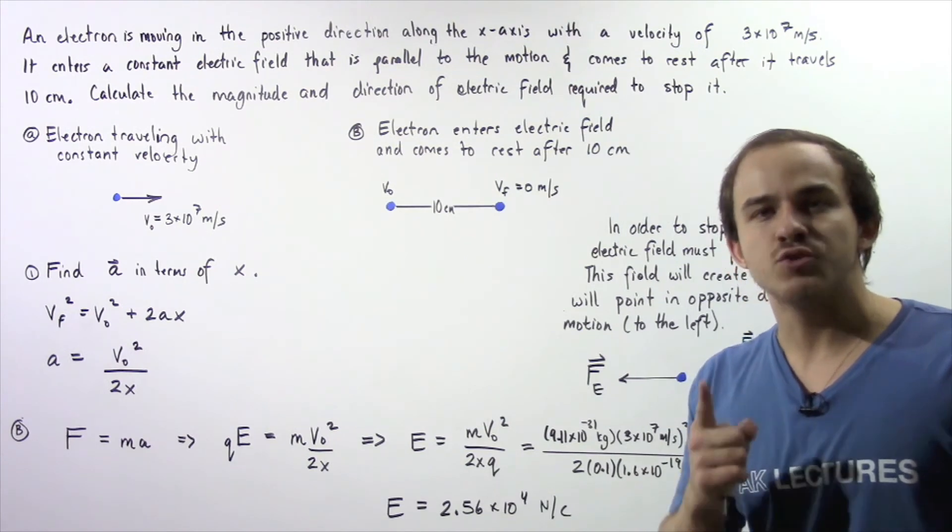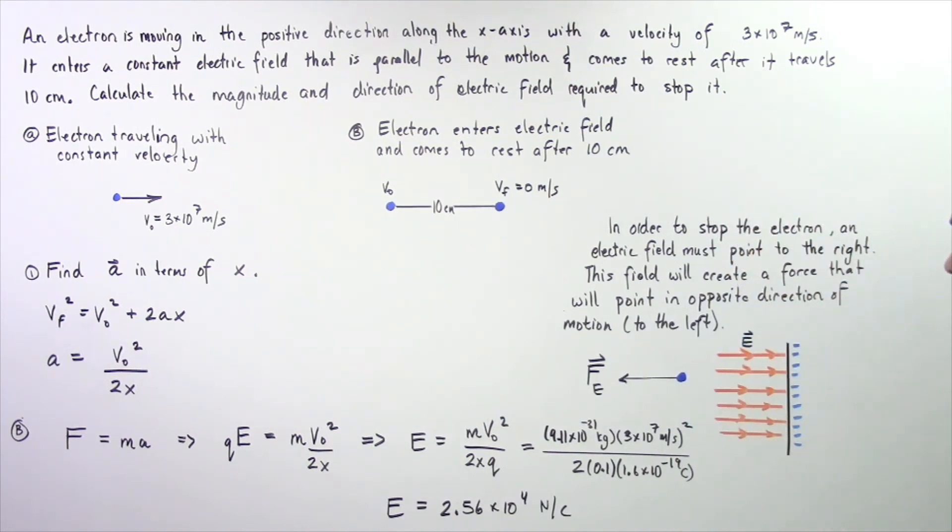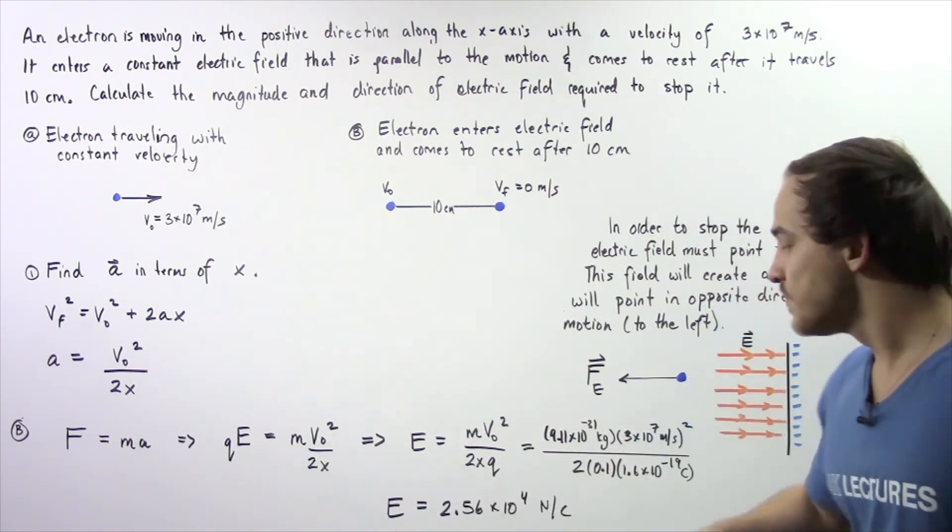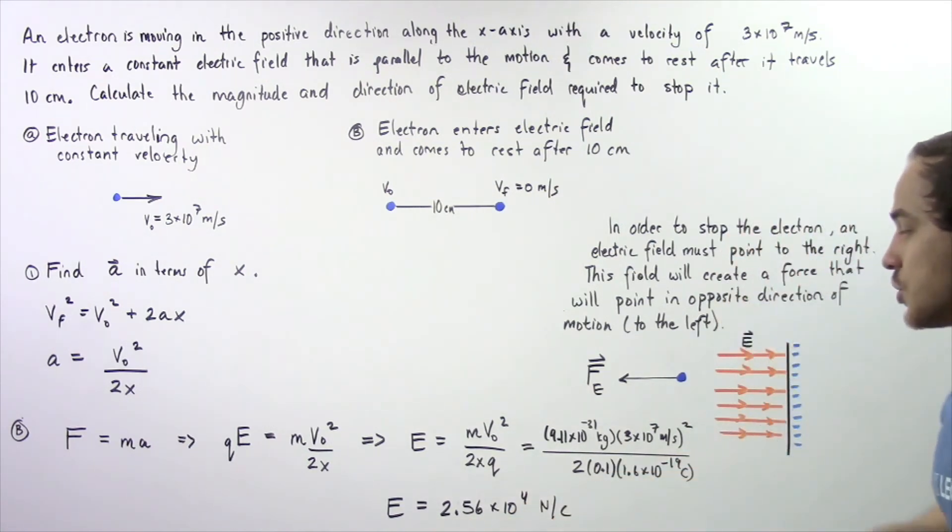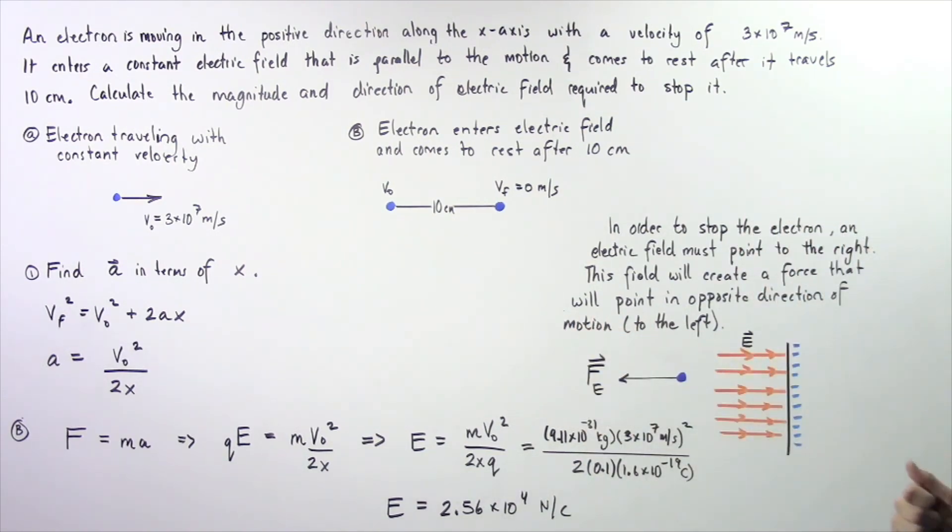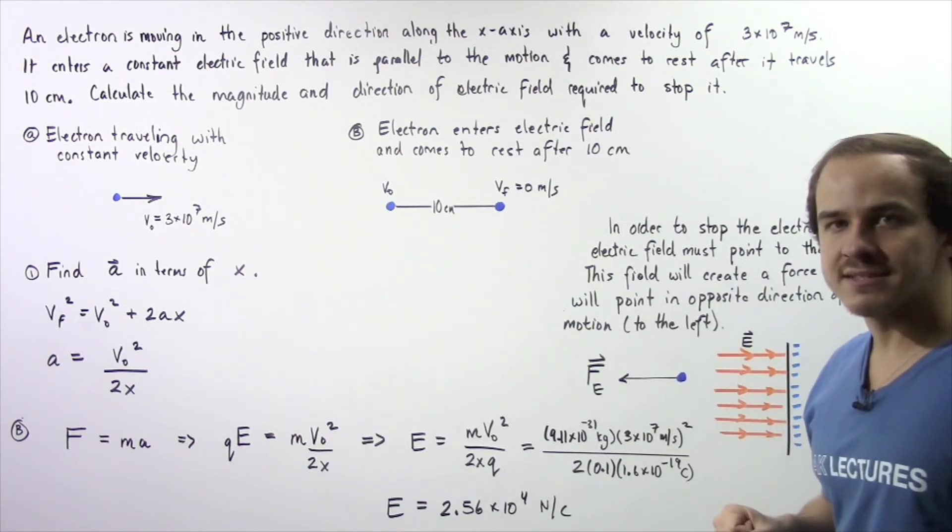Plugging this into our calculator, we see that our electric field magnitude is 2.54×10^4 N/C. The electric field points in the positive direction along our x-axis.